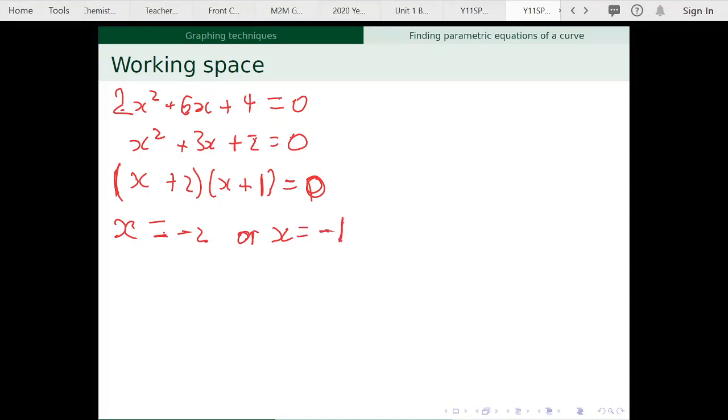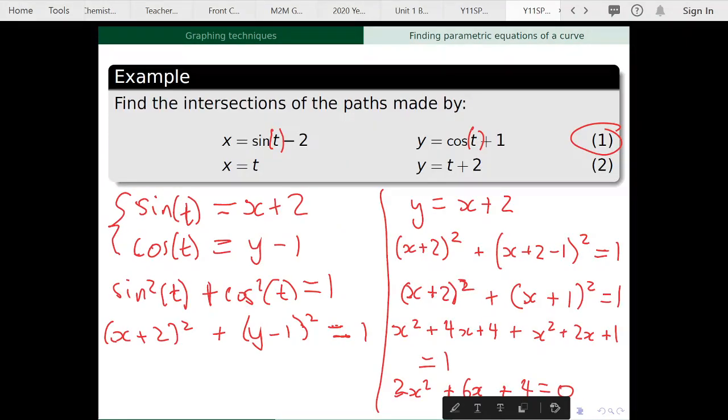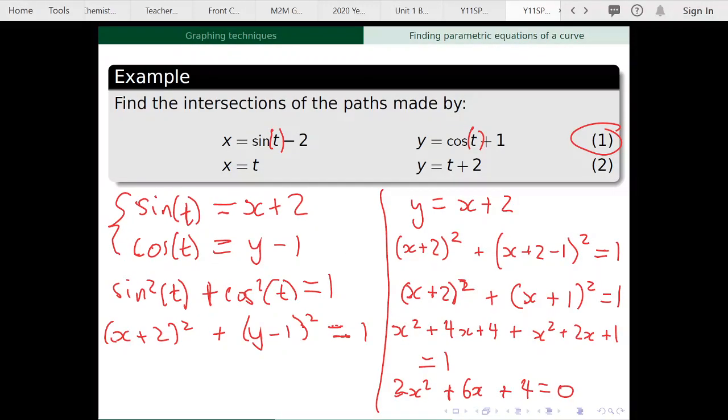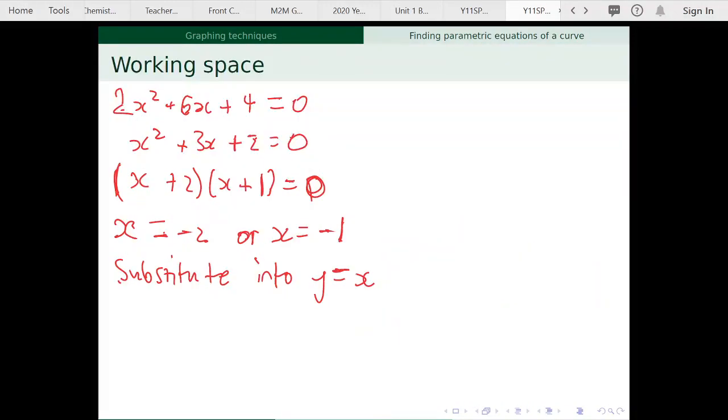So we now have the values of x for the intersection. So what I'm going to do is I'm going to use that equation for the line, that one y equals x plus 2. I'm going to substitute those in, y equals x plus 2, so that I can get the corresponding y values.